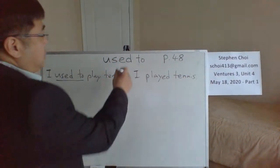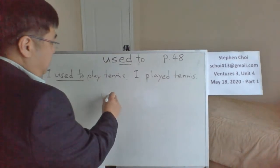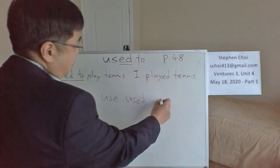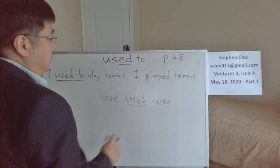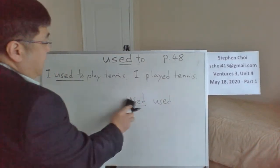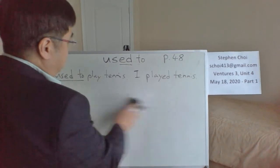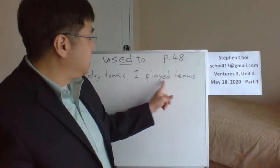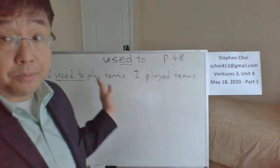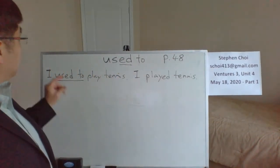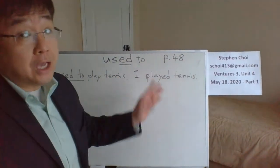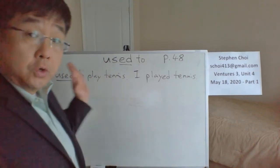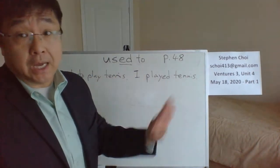So, 'used to' — as you can see — it's a regular verb. 'Used' — and 'used' is past tense, a simple past. 'I used to play tennis.' And 'play' is also simple past. They're both simple past, but one is using 'used to' and the other is not. So what's the difference in meaning?